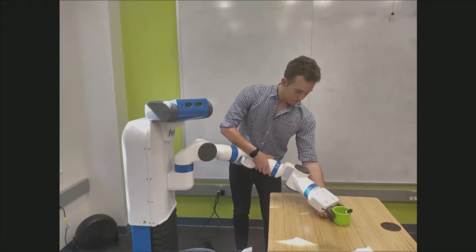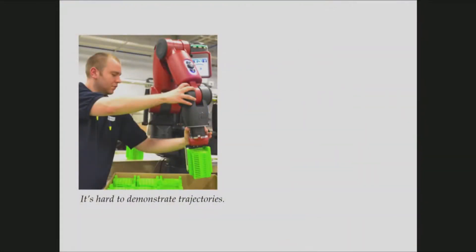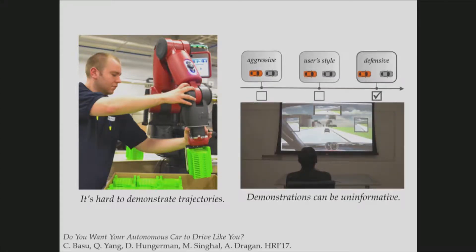But acquiring such demonstrations are sometimes very challenging due to a few reasons. First of all, it's hard to demonstrate trajectories to robots with more than a few degrees of freedom. And also, people do not always perform tasks the way they want robots to operate. For example, there is a study by Anka's group where they show people do not want autonomous cars to drive as aggressively as them. So in that sense, driving trajectories are not even informative of human preferences.